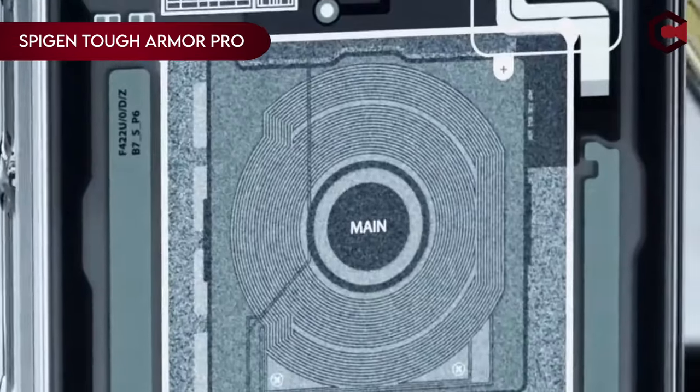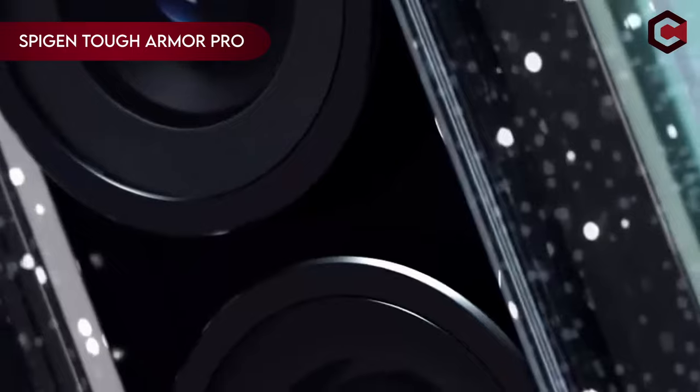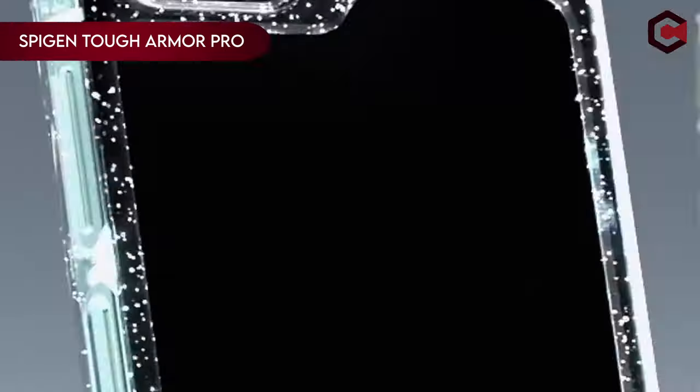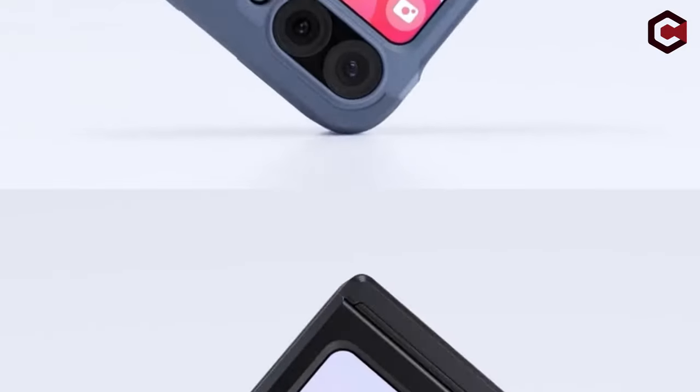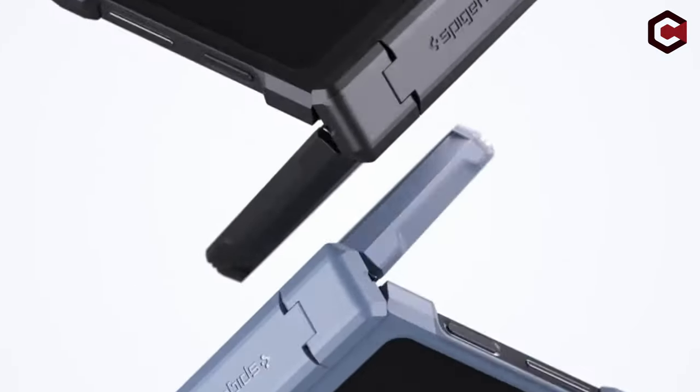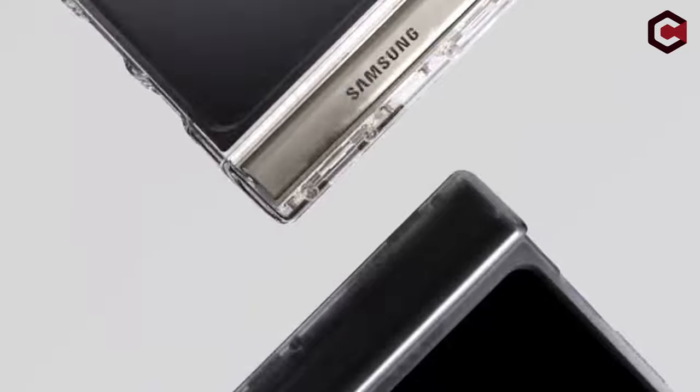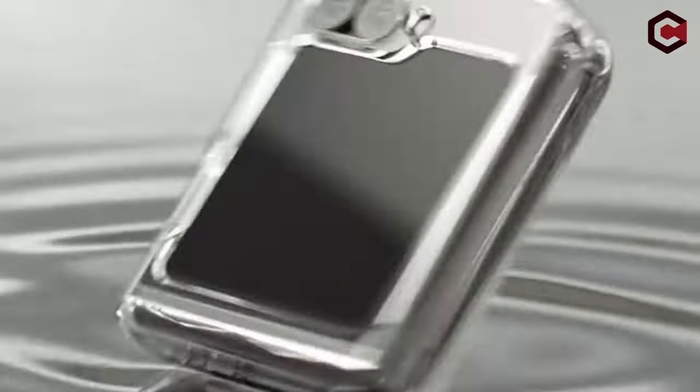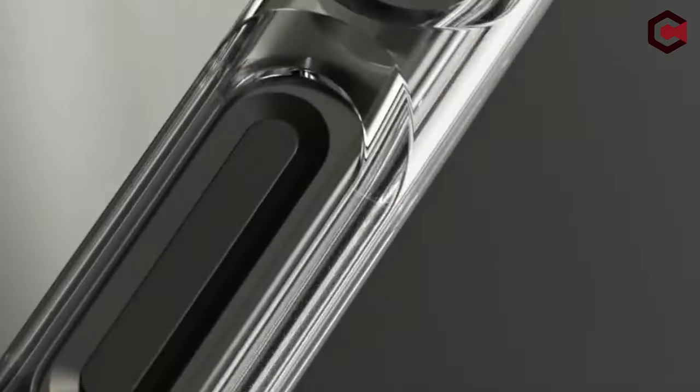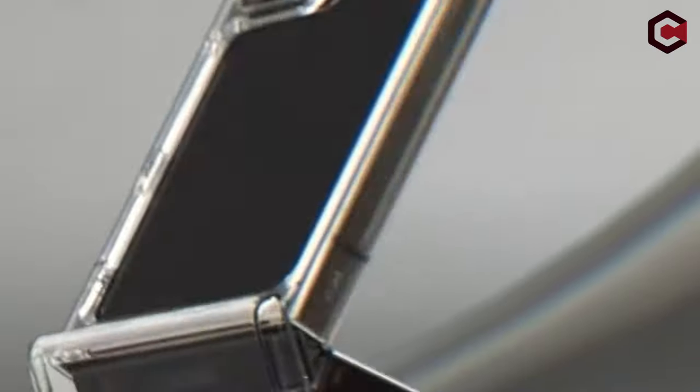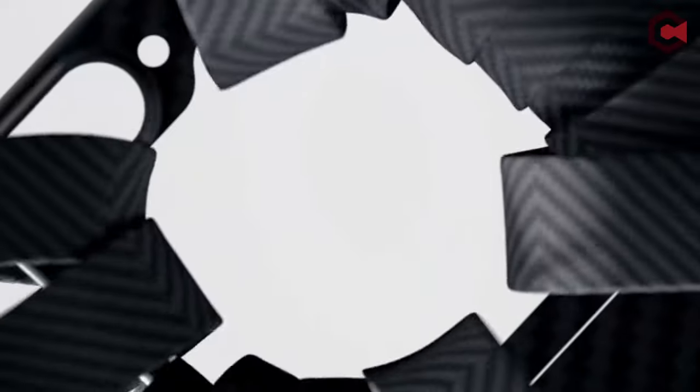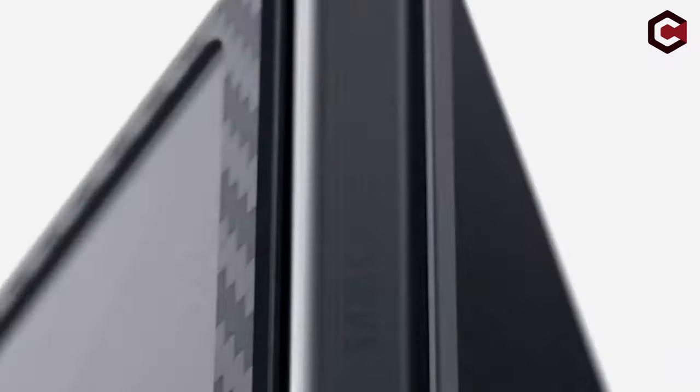On number 9, Spigen Tough Armor Pro. The Spigen Tough Armor Pro offers robust protection with a blend of TPU and polycarbonate materials, designed to shield against drops and scratches. It features advanced foam technology for enhanced shock resistance and is MIL-STD-810G-516.6 certified, ensuring durability. The case includes a reinforced kickstand and raised lips to safeguard the screen and camera.